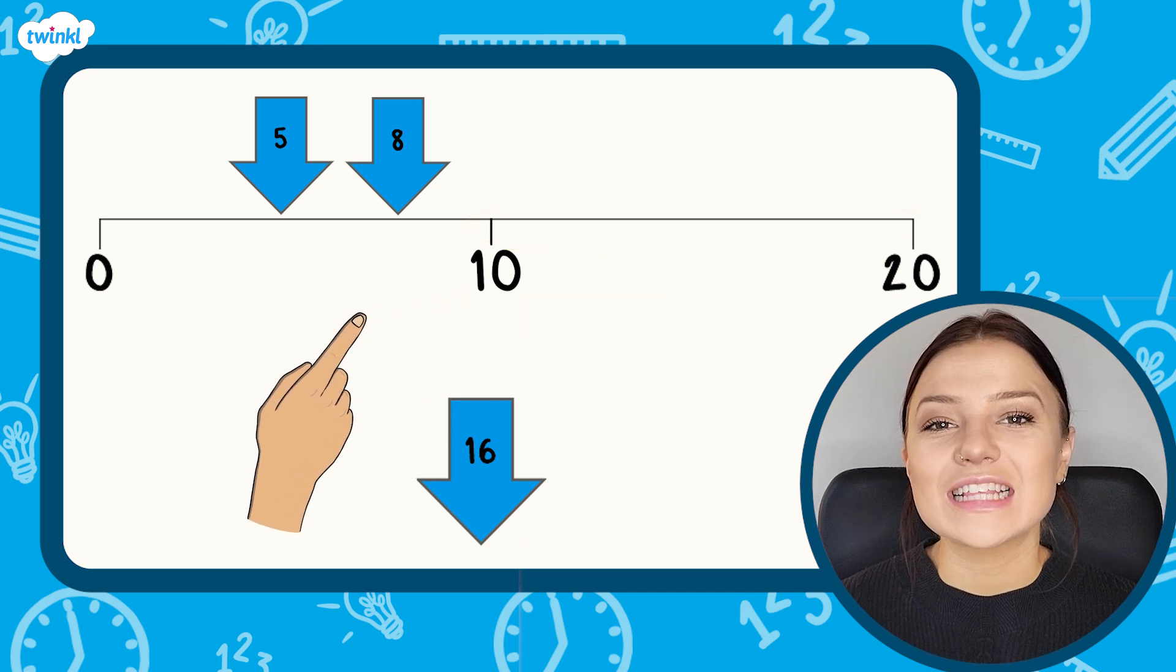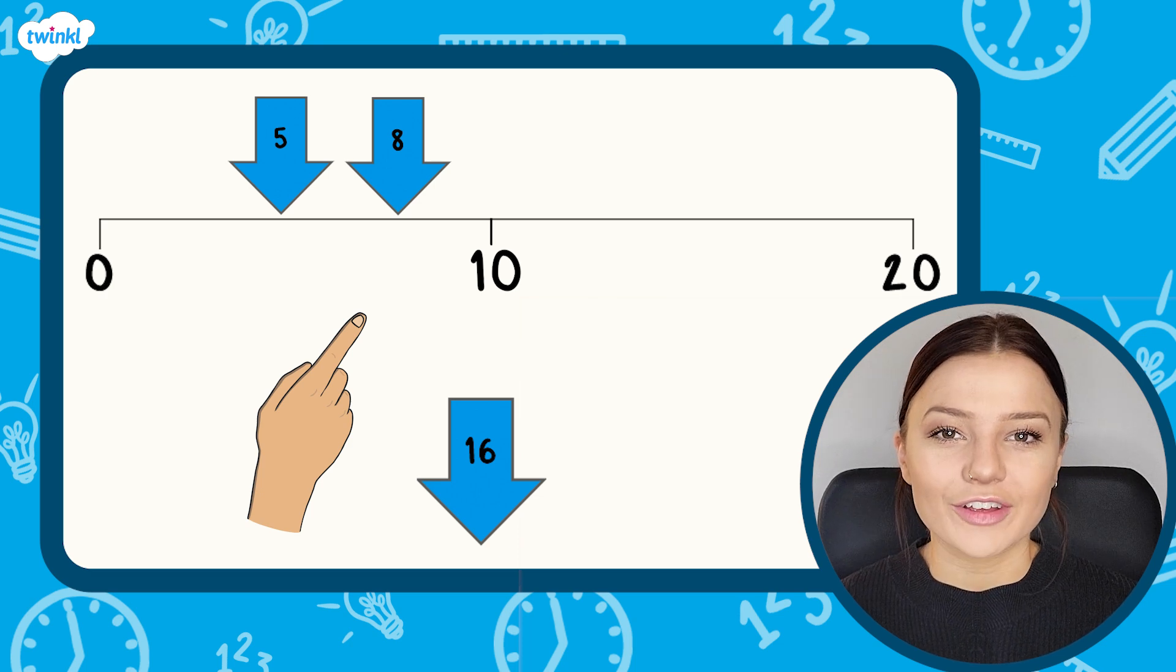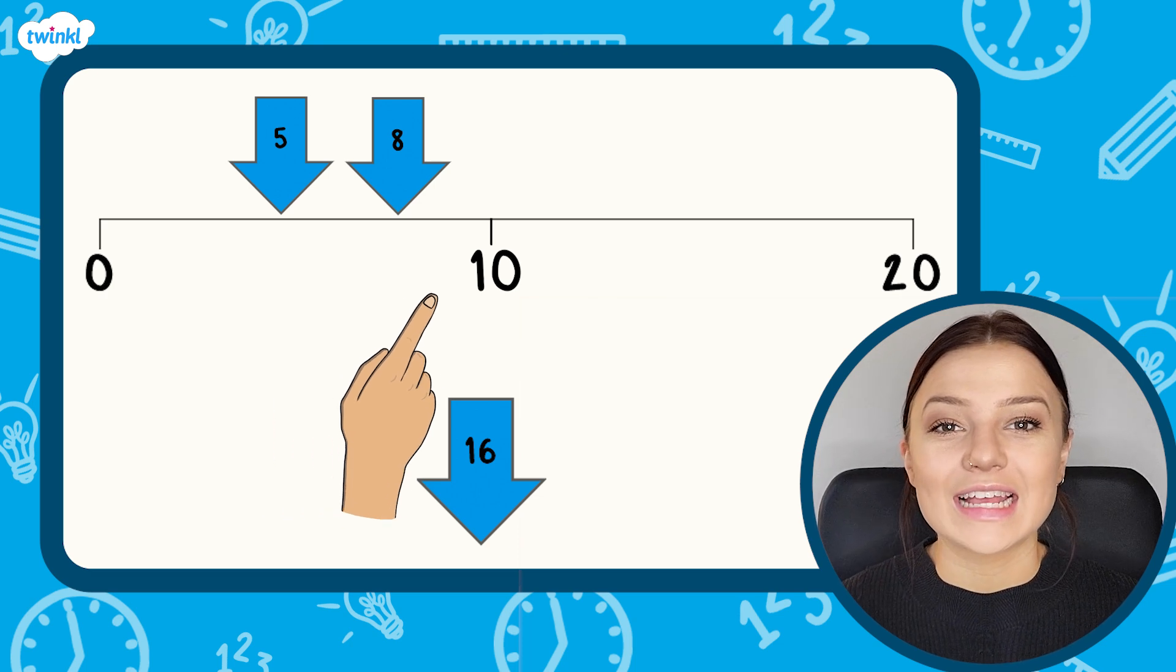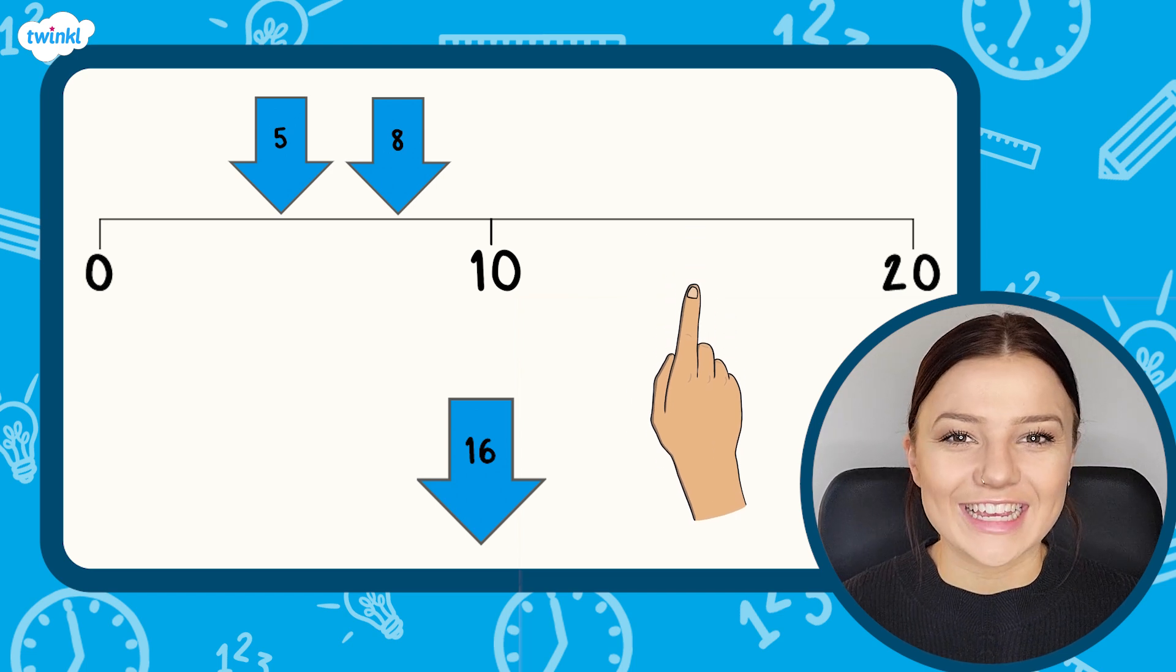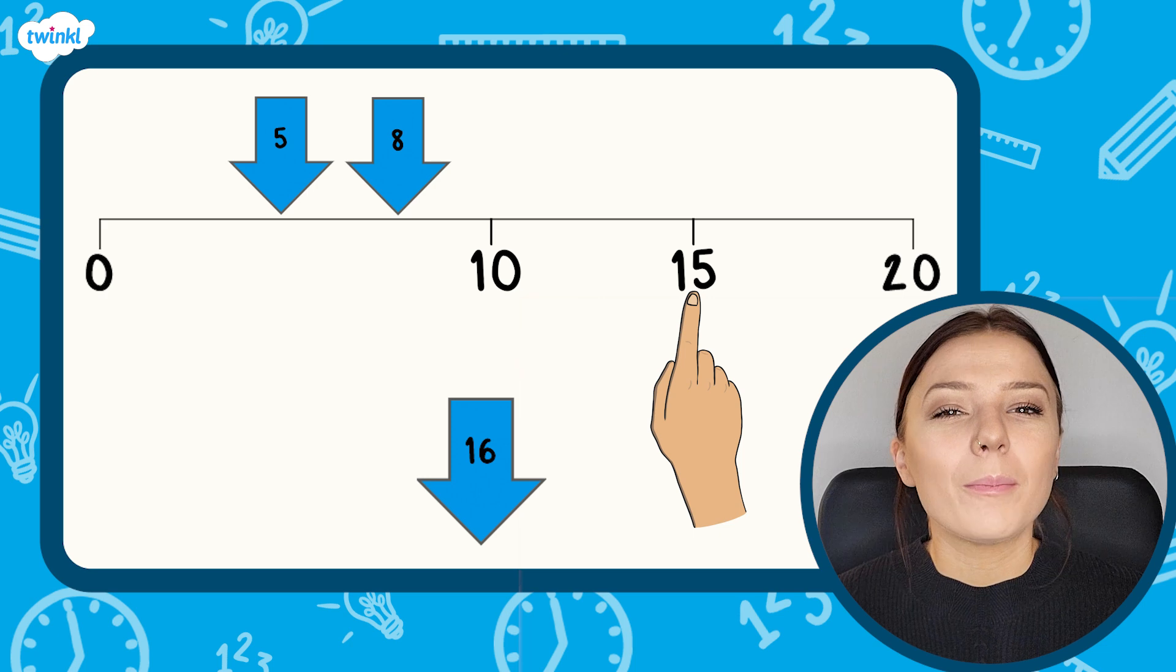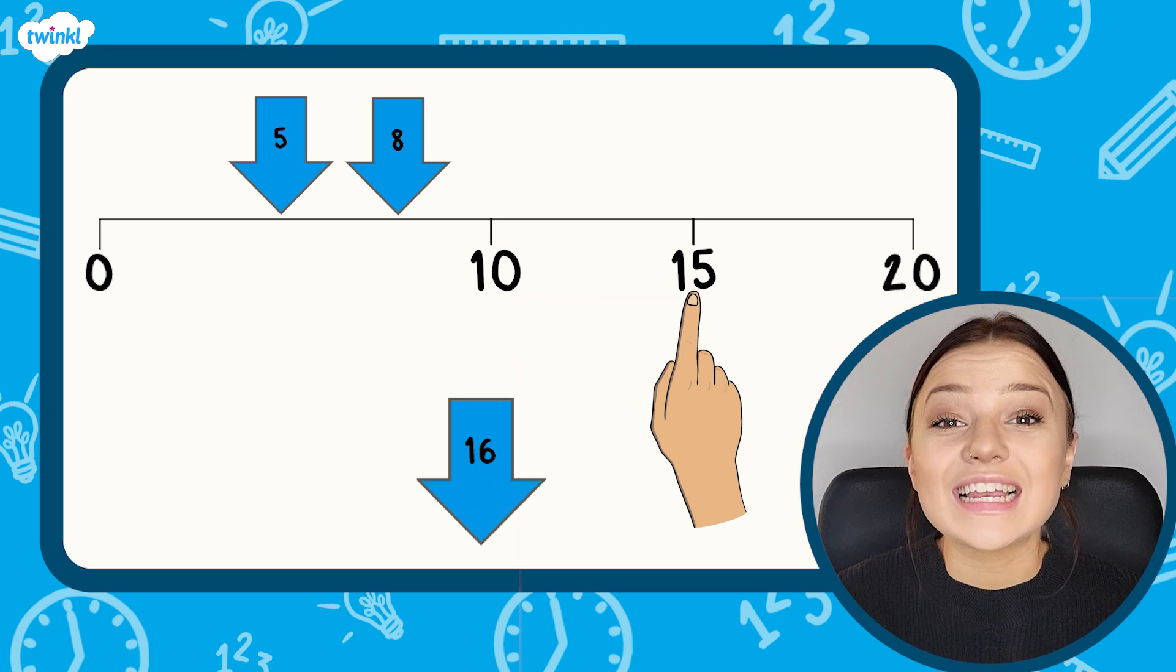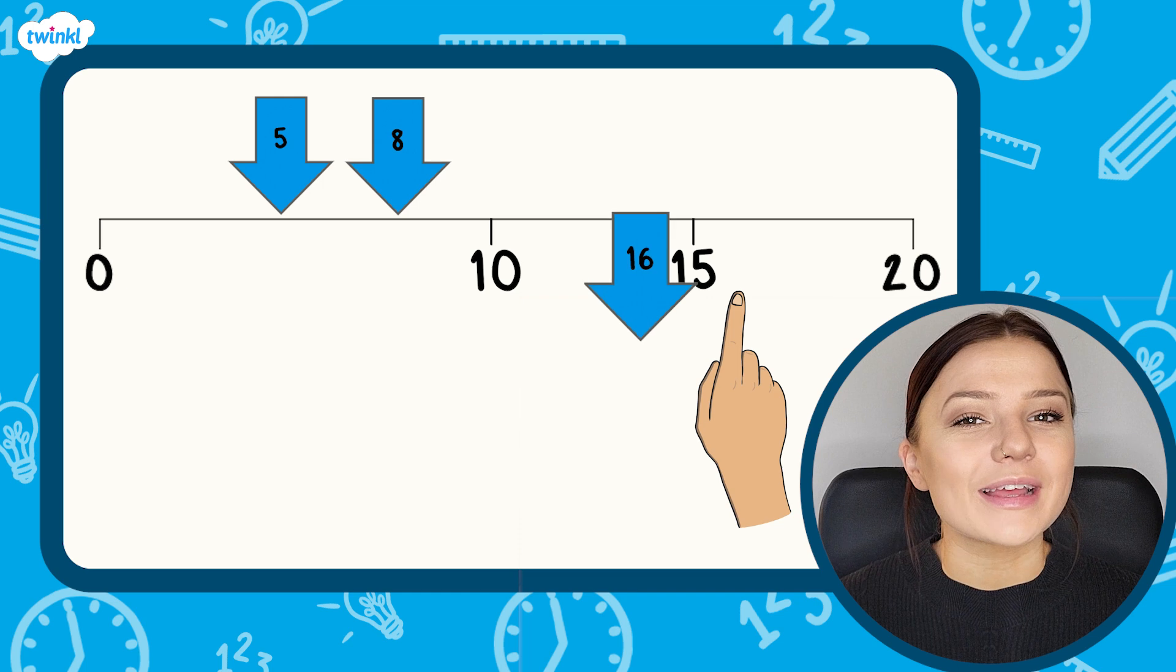The difference between 10 and 20 is 10 and half of 10 is 5. So the halfway point between 10 and 20 will be 5 more than 10 which is 15. Knowing this will help me to estimate where 16 will be more accurately. 16 is 1 more than 15, so 16 will go approximately here.